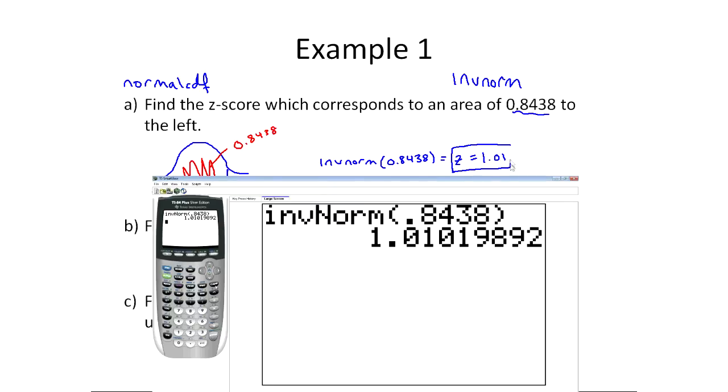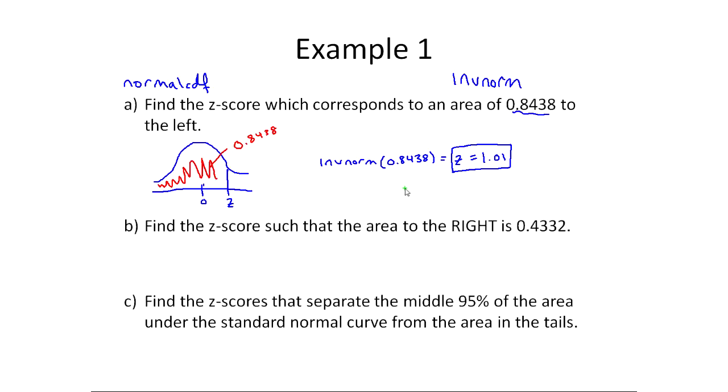You could actually check this answer. What you would do is you would do normal CDF and look to the left of this z-score. If I go minus e99 out to 1.01, I should get approximately 0.84. This was rounded a bit, so this is how you can actually check your work. If this is 1.01, then this has to be the area to the left.